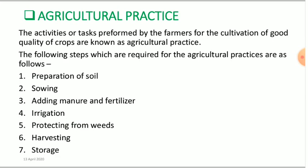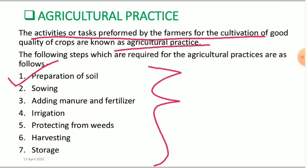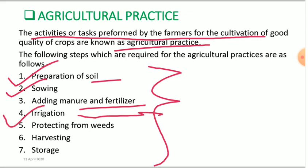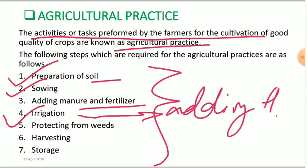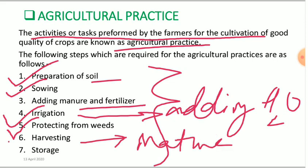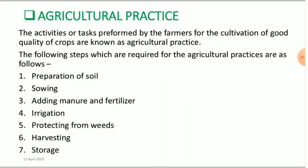Now let's look at agriculture practices. When activities or tasks are performed by farmers, these are known as agriculture practices. First, farmers prepare the soil; then they sow the seeds; then they add manure and fertilizer; then irrigation — meaning adding water; then protection from weeds; when crops mature, they are harvested — meaning cut down; and finally the crops are stored. Remember these steps.